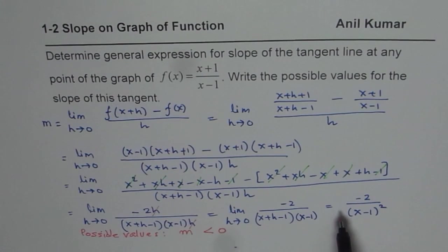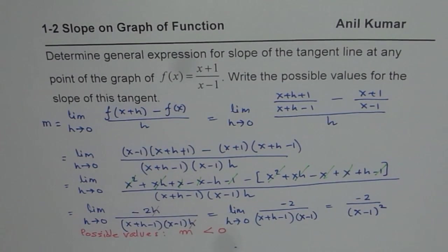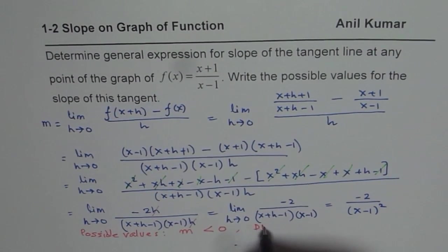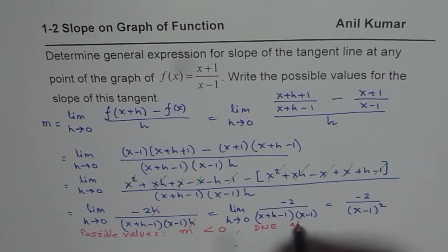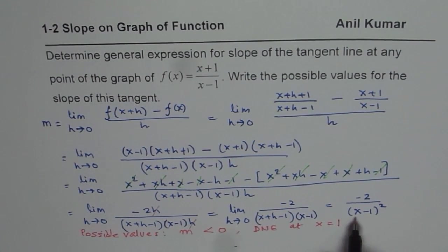Now, sometimes you may have to find a slope of the tangent at many different points. You could substitute those x values and calculate. It is all possible values are less than 0 and it does not exist at x equals 1. There is a discontinuity at x equals 1.